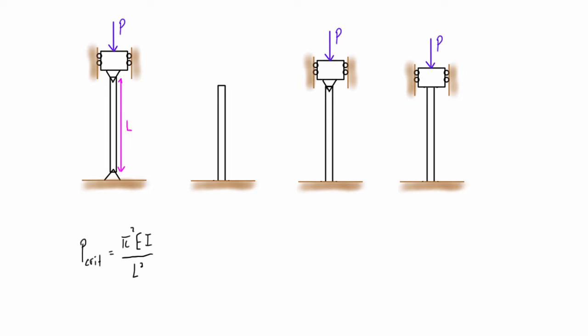Now when we have something like this, a double pin connection in a column, it's free to bend basically all the way from pin to pin, so you're going to end up getting some sort of deflection probably like that.